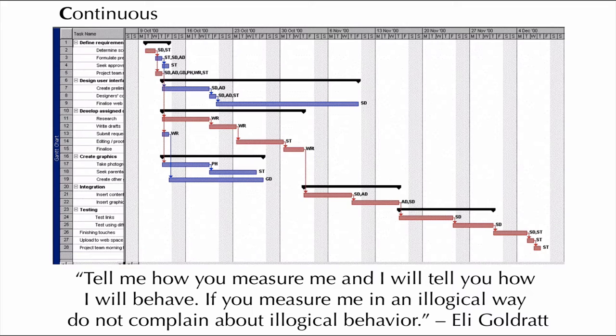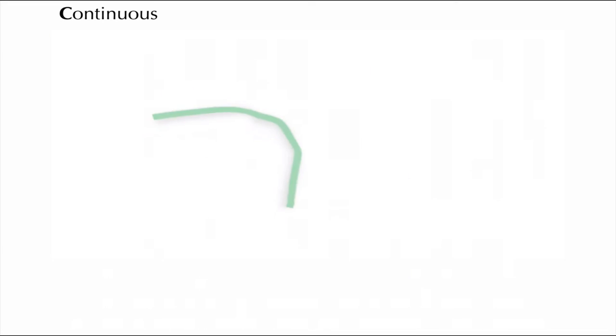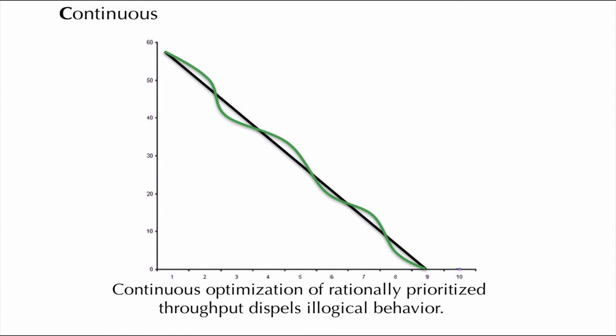By definition any work done to open a constraint that isn't currently the bottleneck can't affect throughput. As throughput doesn't turn up on a Gantt chart and actually most constraints don't turn up on a Gantt chart, Gantt charts can't possibly generate logical business decisions. Let's look at where they go off the rails.